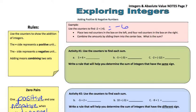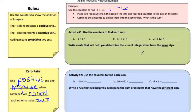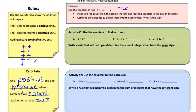Let's do the first activity. It says use the counters to find each sum. If you don't want to use the counting mat, that's fine — let me show you how to do it without. Looking at A, this is positive 5 plus 6. You could write 5 positives and then 6 positives, keeping them lined up so 1 matches with 1. Count them up and there will end up being 11 positives.